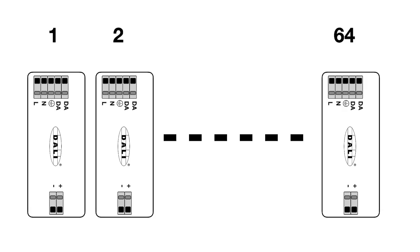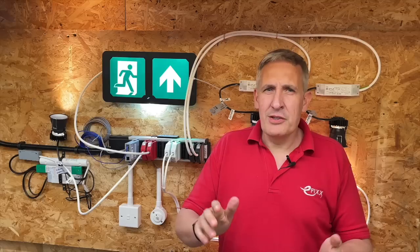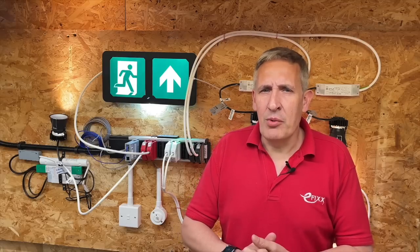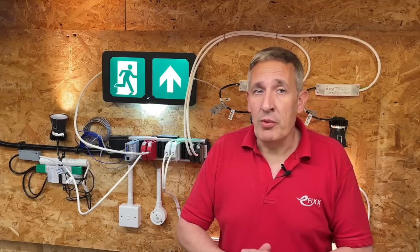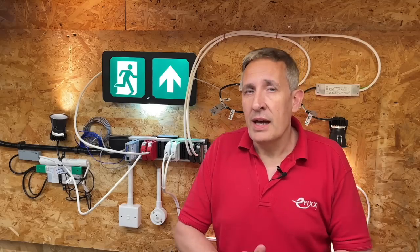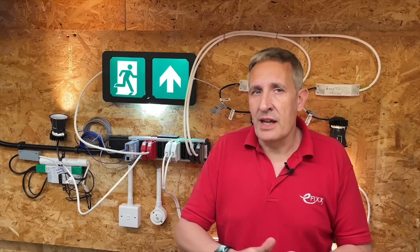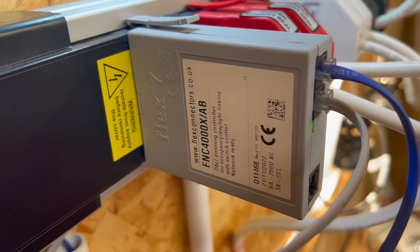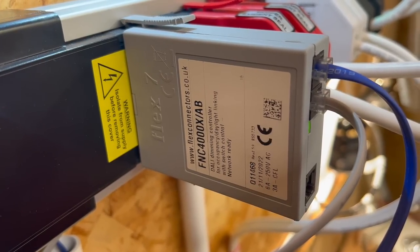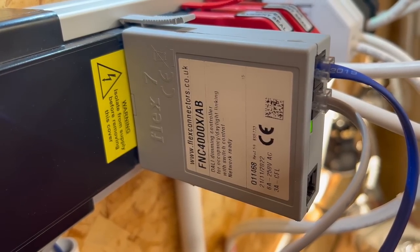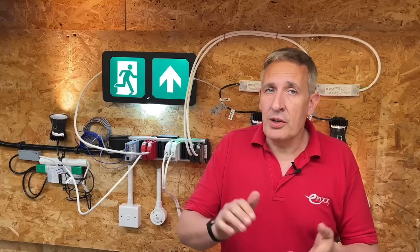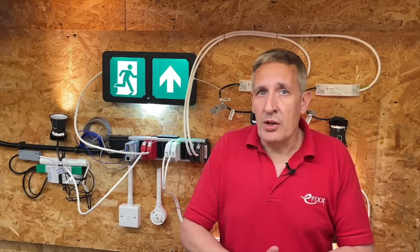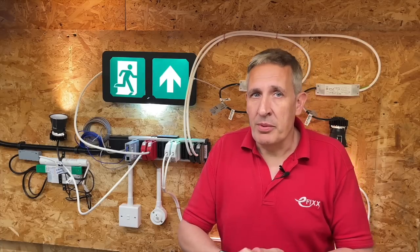The DALI standard allows you to control up to 64 individual lighting fixtures on one DALI bus. Now electricians are usually taught to keep power and data wiring separate — with DALI you don't have to. In most installations the data bus is contained within the same cable as the power itself. It's a robust protocol which is immune to disturbances on the mains power supply.